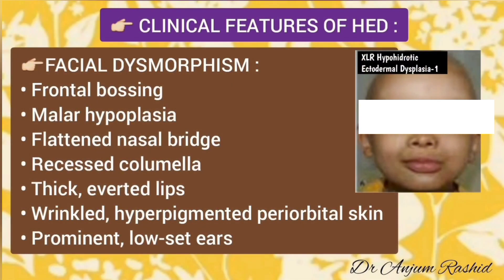The clinical features of hypohydrotic ectodermal dysplasia include characteristic facial dysmorphism: frontal bossing, malar hypoplasia, flattened nasal bridge, recessed columella, thick everted lips, wrinkled hyperpigmented periorbital skin, and prominent low-set ears.